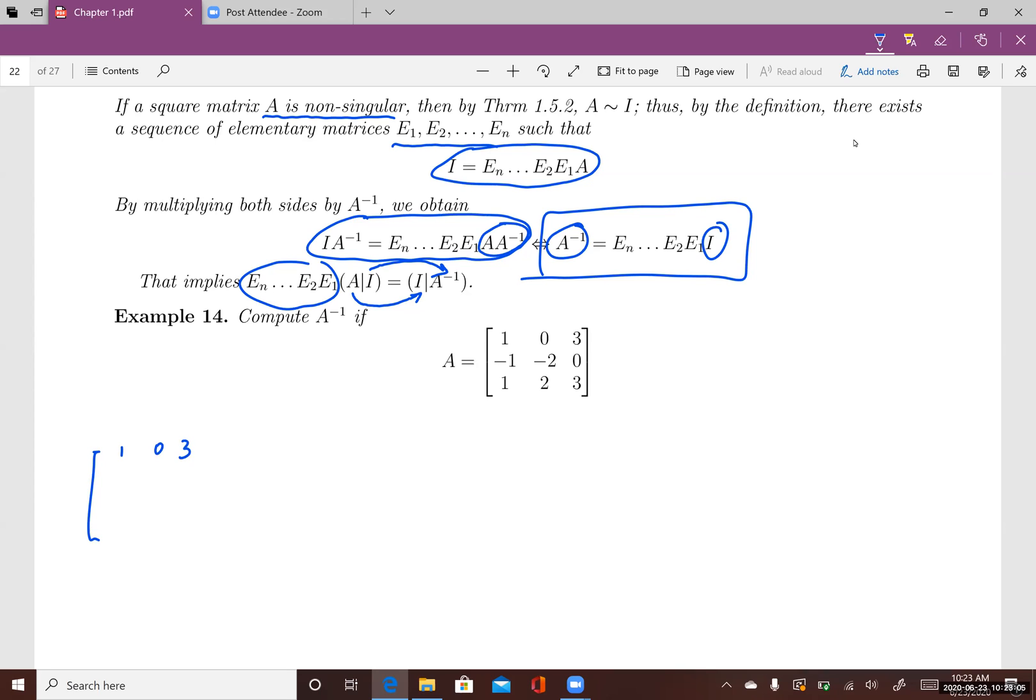Augmented with I, which is 1, 0, 0, 0, 1, 0, 0, 0, 1. And at this point, we know how to reduce A to I. Let's see. The first row here is the pivot row at this point.